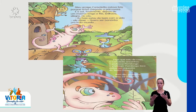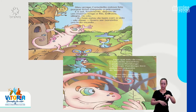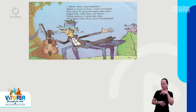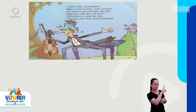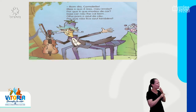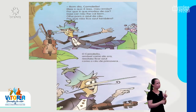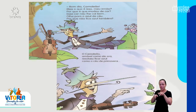Logo que saiu de casa, o camaleão encontrou o professor Pernilongo. O professor Pernilongo toca violino na orquestra do teatro florestal. Bom dia, professor! Como vai o senhor? Bom dia, camaleão! Mas o que é isso, meu irmão? Por que é que mudou de cor? Essa cor não lhe cai bem. Olha para o azul do céu. Por que não fica azul também? O camaleão, amável como ele era, resolveu ficar azul, como o céu de primavera.